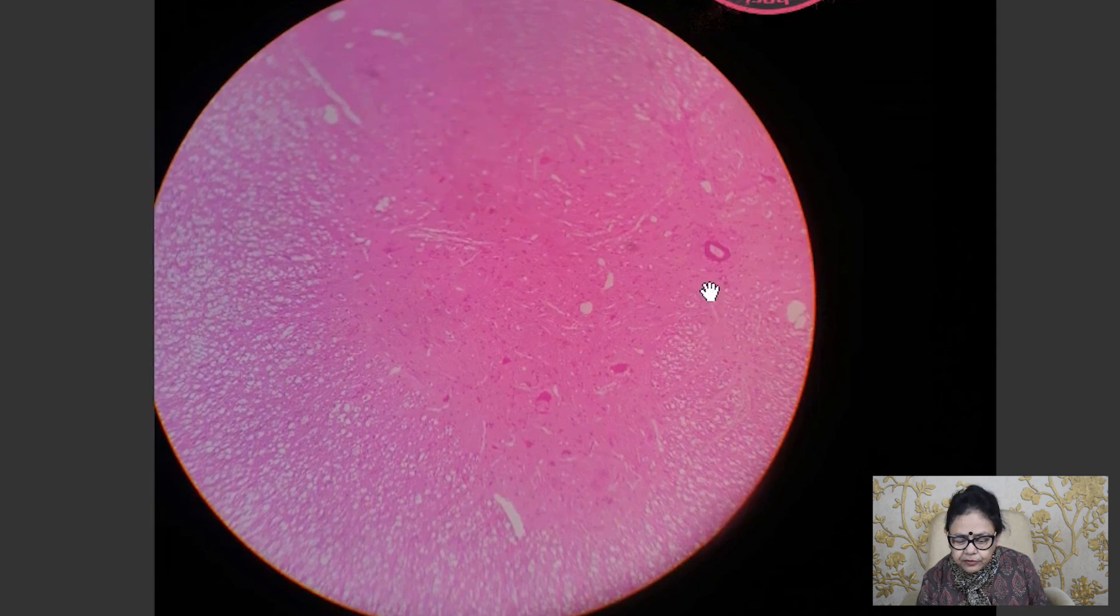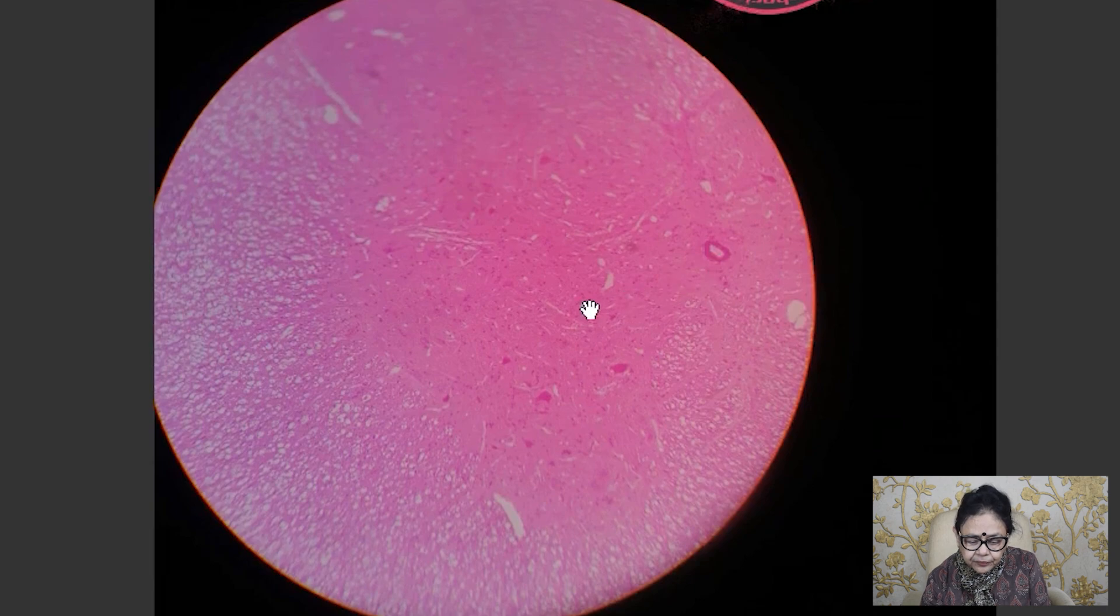You will see the one half because you will see the central canal is situated not in the middle. Next, you will see this is the white matter on the outside from the anterior aspect, lateral aspect and the posterior aspect. Thank you everyone for watching this video.